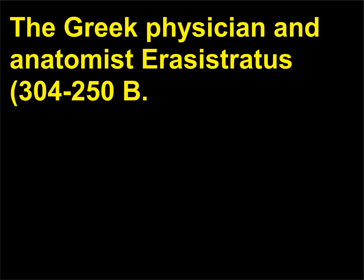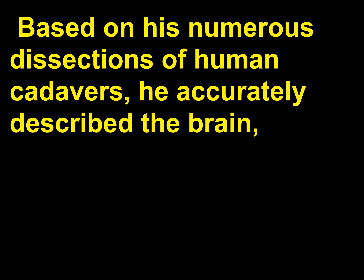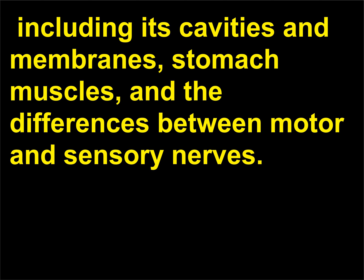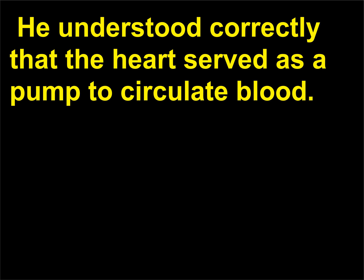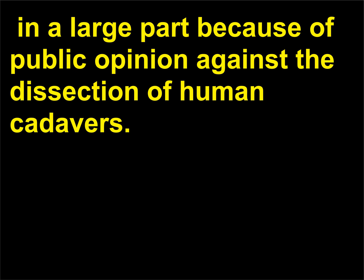The Greek physician and anatomist Erasistratus, 304-250 BCE, is considered the father of physiology. Based on his numerous dissections of human cadavers, he accurately described the brain, including its cavities and membranes, stomach muscles, and the differences between motor and sensory nerves. He understood correctly that the heart served as a pump to circulate blood. Anatomical research ended with Erasistratus until the 13th century, in large part because of public opinion against the dissection of human cadavers.